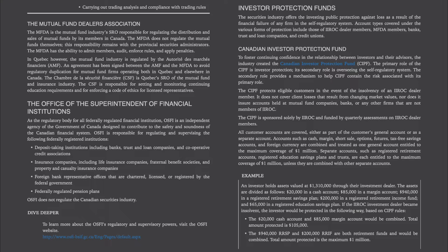Investor protection funds. The securities industry offers the investing public protection against loss as a result of the financial failure of any firm in the self-regulatory system. Account types covered include those of IIROC dealer members, MFDA members, banks, trust and loan companies, and credit unions. To foster continuing confidence in the relationship between investors and their advisors, the industry created the Canadian Investor Protection Fund, CIPF. The primary role of the CIPF is investor protection; its secondary role is overseeing the self-regulatory system. The CIPF protects eligible customers in the event of the insolvency of an IIROC dealer member. It does not cover client losses that result from changing market values, nor does it insure accounts held at mutual fund companies, banks, or any other firms that are not members of IIROC.